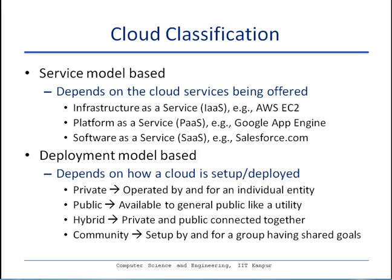A community cloud is different — multiple organizations or groups with shared goals come together and share their infrastructure to set up a cloud. It is not typically available to the general public; it is only for a closed group of organizations with shared interests. For example, three universities working on similar private research projects might share their computing infrastructure to better utilize it as a whole and create a community cloud.